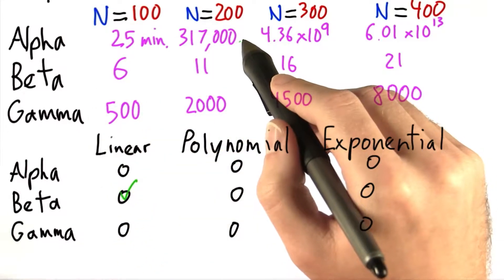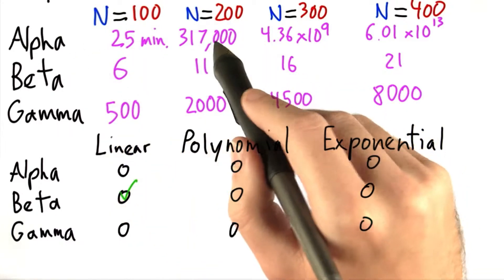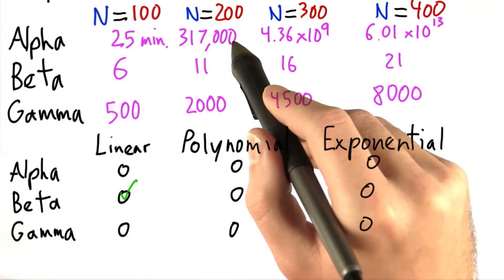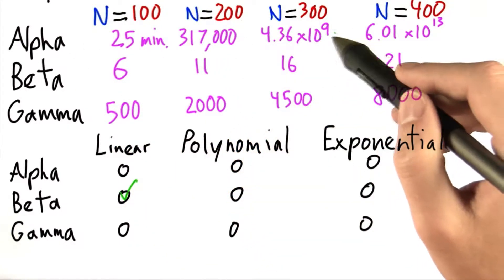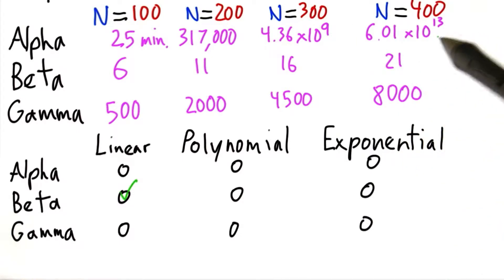But at N equals 200, alpha is already in the hundreds of thousands. And then it gets even bigger and bigger very, very quickly.